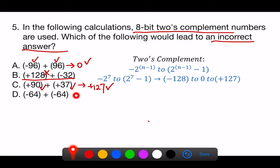D, minus 64 plus minus 64. Both numbers can be represented, and their sum is minus 128, which is the minimum number representable in 8-bit 2's complement.